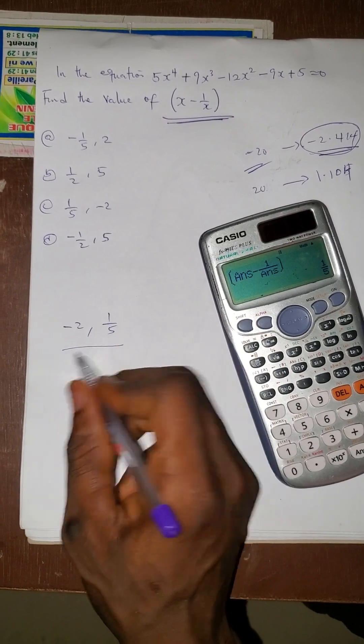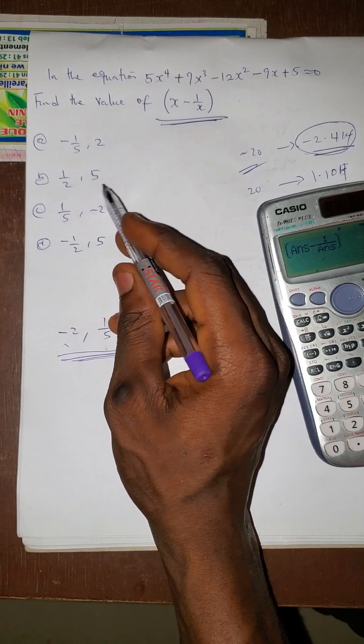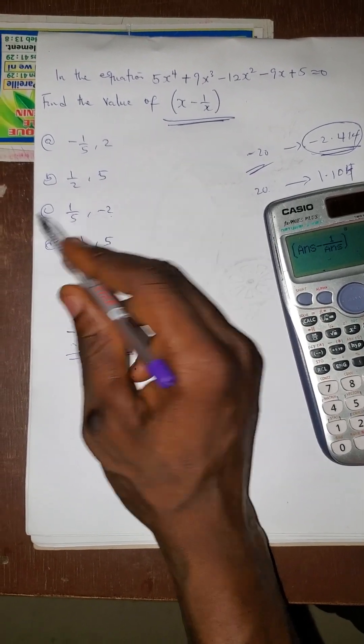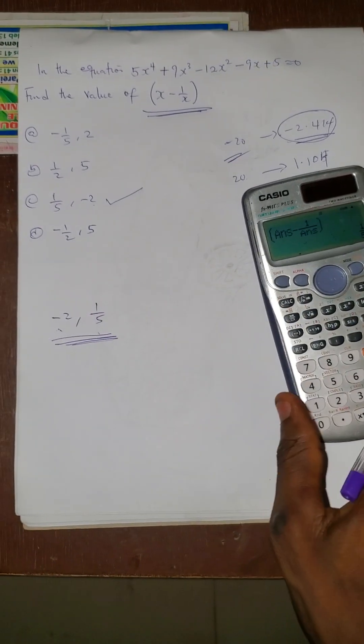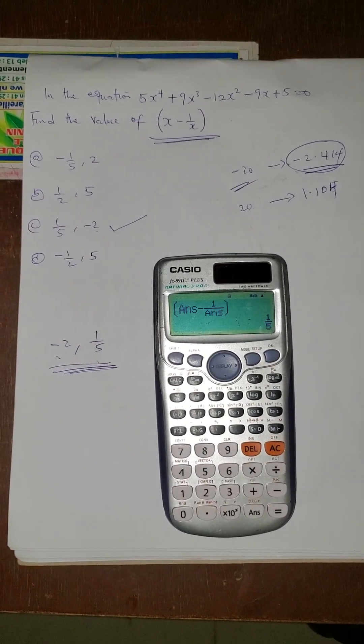So the values are -2 and 1/5. So -2 and 1/5, that's option C. So that's the correct answer. Follow us for more videos.